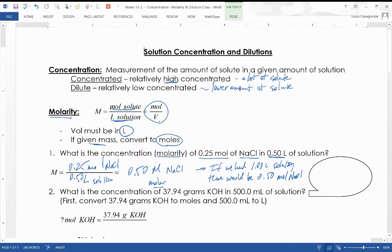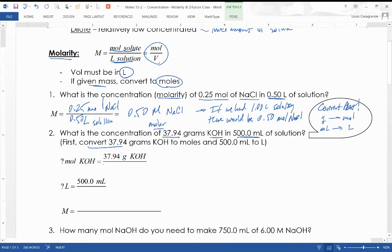Next let's talk a little more complex problem. We have 37.94 grams of potassium hydroxide in 500 milliliters of solution. So we've got two convert alerts here. The first convert alert: we have to take the grams and convert it into moles. And then the second convert alert: we have to take our milliliters and convert that into liters. All right, so I've said that here. Let's show those conversions before we put everything together. So to convert to moles we're going back to chapter 11 here.